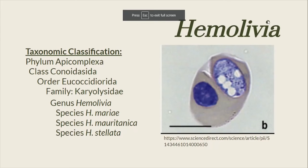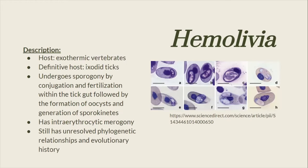Here is the taxonomic classification for the genus Hemolivia. The hosts of the genus Hemolivia are exothermic vertebrates, while its definitive hosts are ixodid ticks. It undergoes sporogeny by conjugation and fertilization within the tick gut, followed by the formation of oocysts and generation of sporokinetes. It has intraerythrocytic merogony and still has unresolved phylogenetic relationships and evolutionary history.